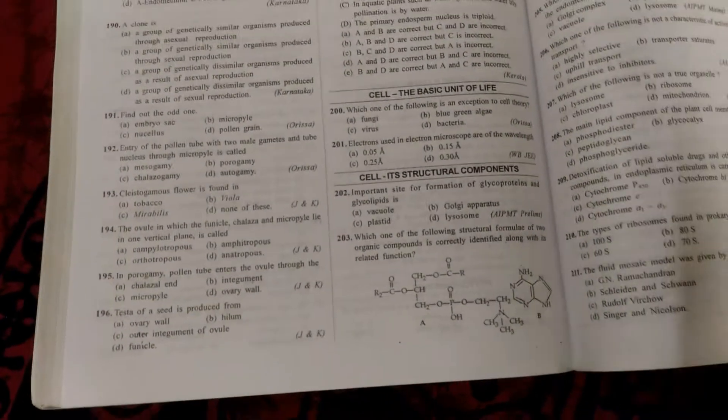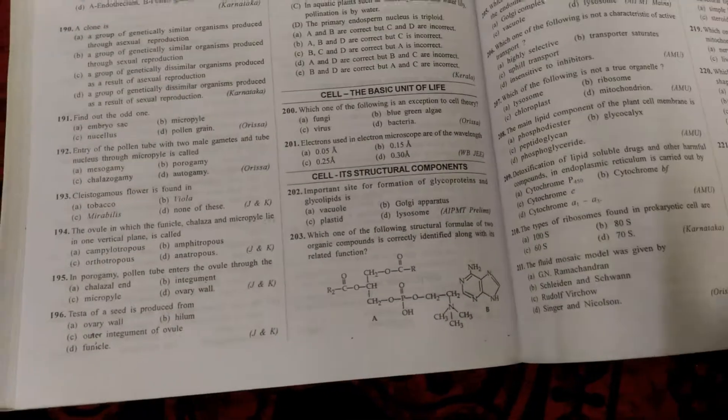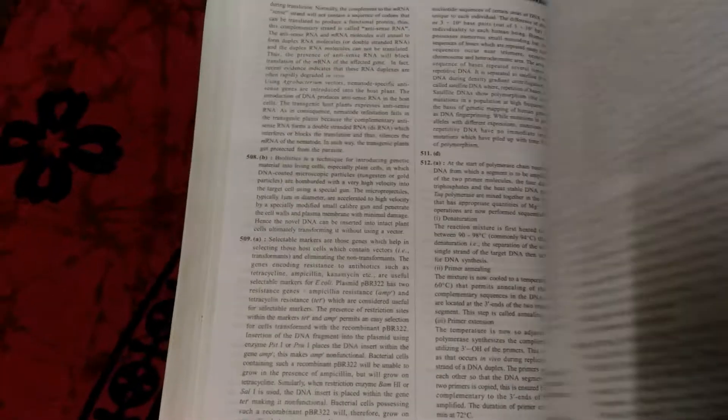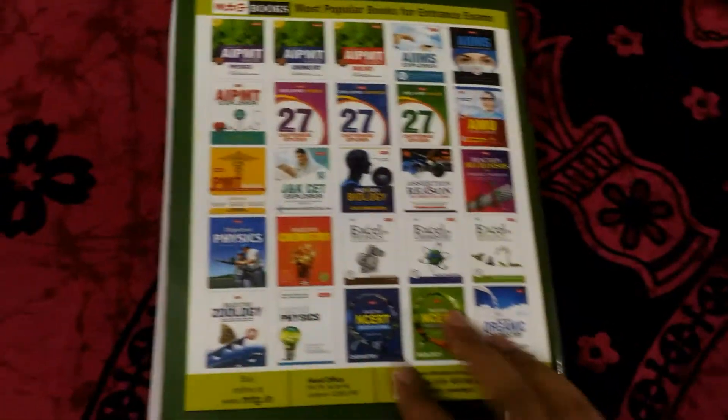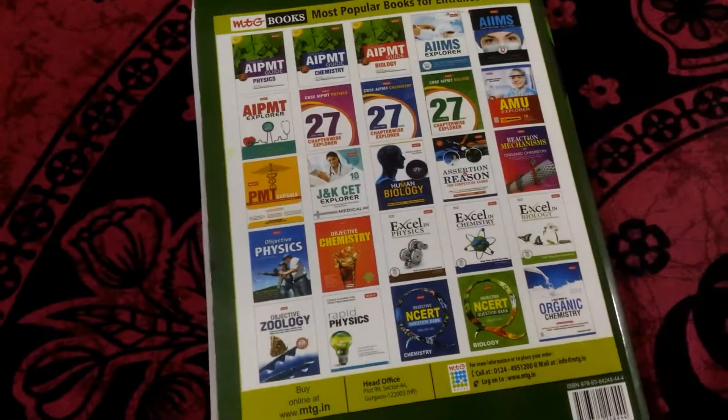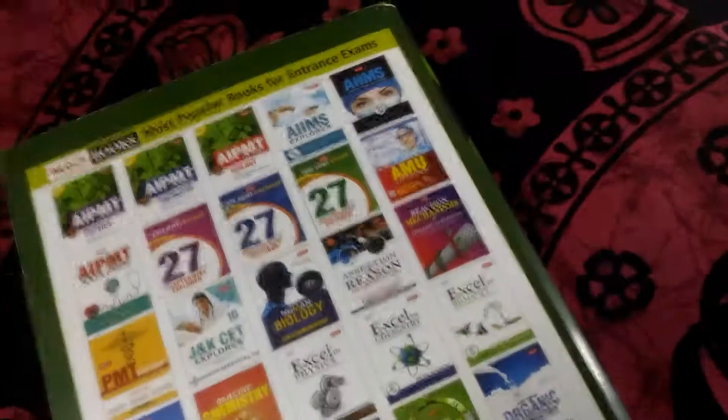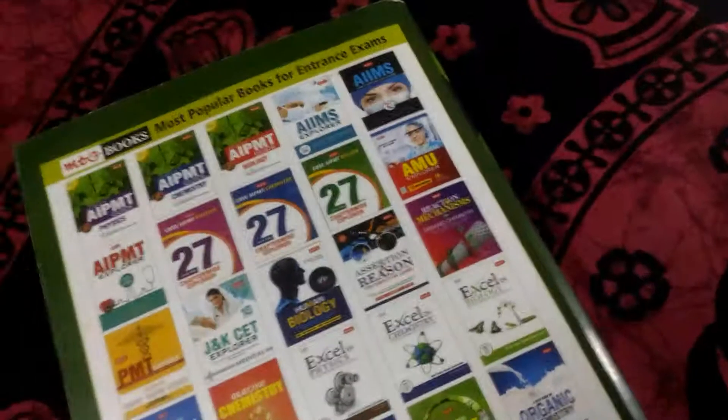In the last portion, there are chapter-wise MCQ questions. For example, cell structure and the basic unit of life has chapter-wise questions discussed clearly. Here you see various types of explanations of these questions discussed easily. You will find various book suggestions at the end of this book.